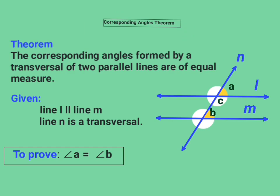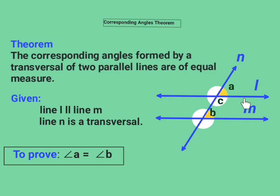Here is the statement of the corresponding angles theorem: the corresponding angles formed by a transversal of two parallel lines are of equal measure. Here, what is given — they give us two parallel lines, that is line L and line M, and N is their transversal.